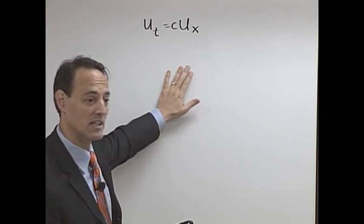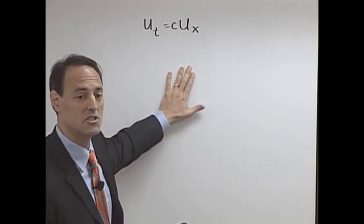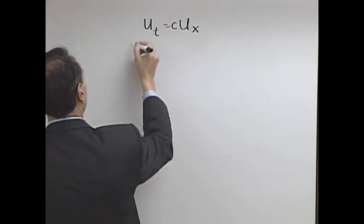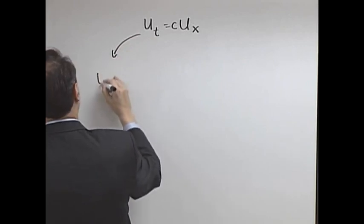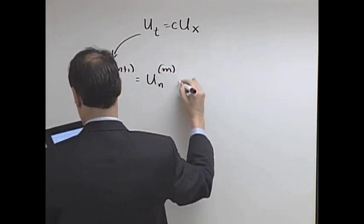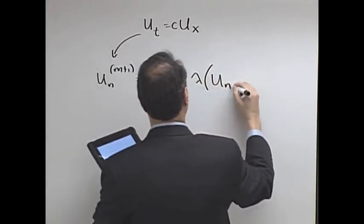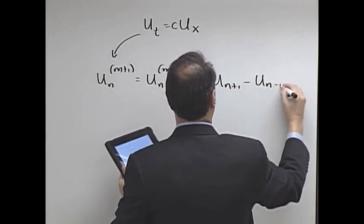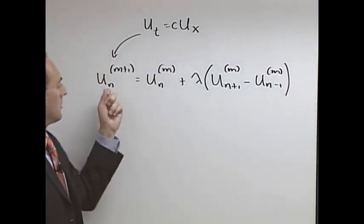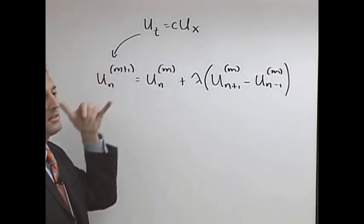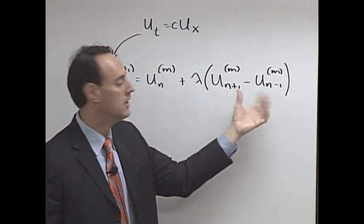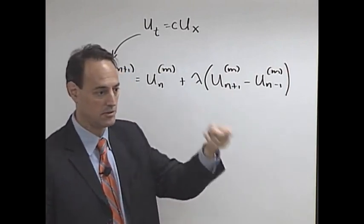But if I discretize using leapfrog 2-2, for instance, it's stable for lambda less than one. So let me write down the scheme that we had. If we do this leapfrog scheme, here it is: the point in the future is what it was one time ago plus some stuff—this is the derivative term—your two neighbors making a contribution to your future.